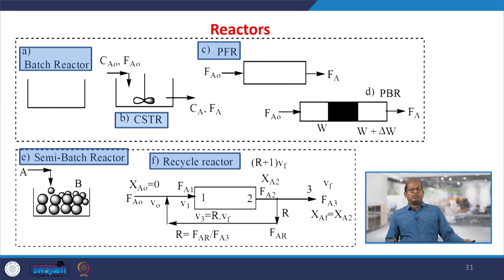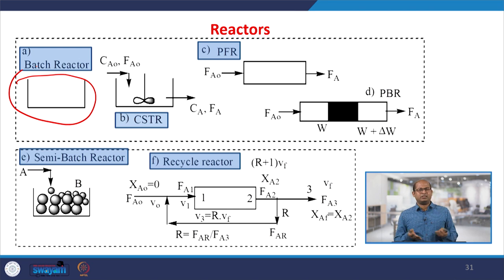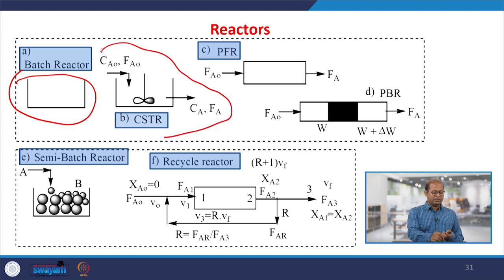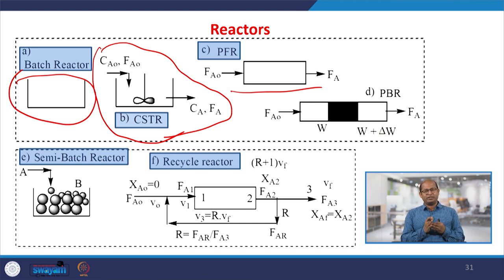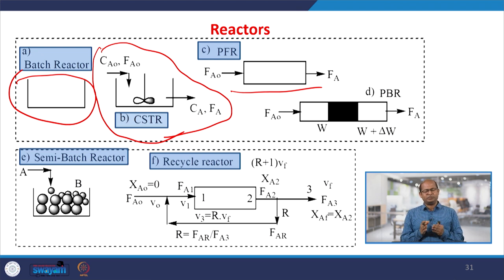Here, talking about a particular reactor — a batch reactor: reactants are placed inside the reactor and we conduct the reaction. Similarly, in a CSTR reactor, there is an inlet where reactant enters and product comes out — this is a flow reactor where reaction also takes place simultaneously. For a PFR reactor, there is no stirrer — just a long tube through which the reactant passes while maintaining a particular temperature. As the reactant moves along, conversion takes place gradually, and conversion increases along the length of the reactor, giving higher conversion at the end.